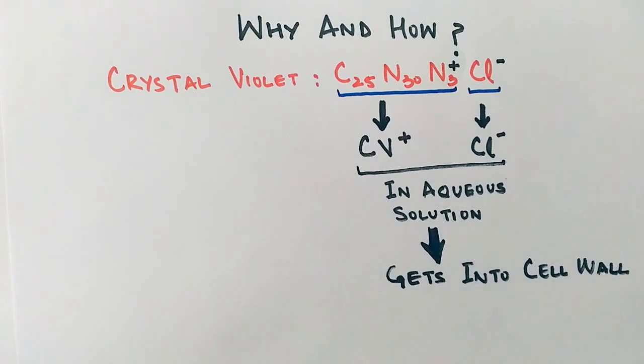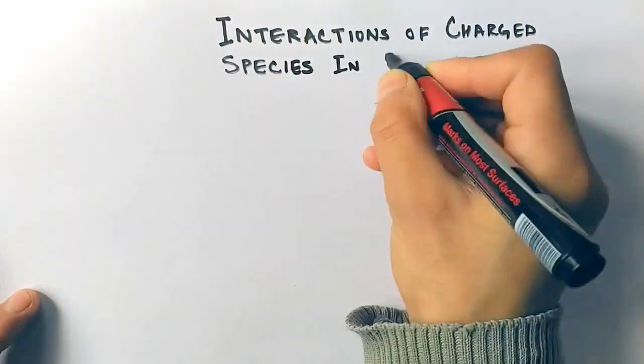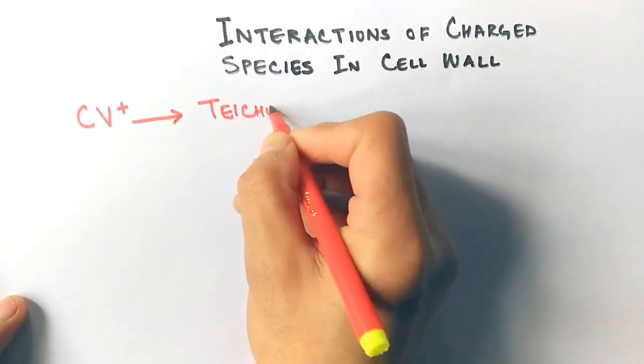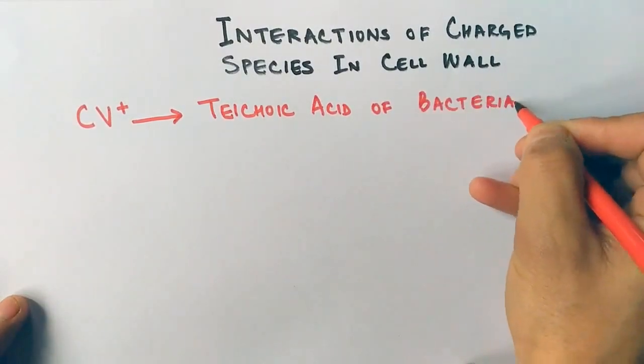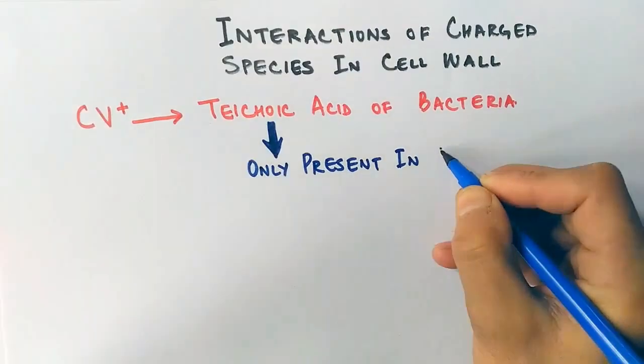After getting into the cell wall, there are different types of interactions of these charged species in the bacterial cell wall. The first interaction is between CV positive and teichoic acid of bacteria, but this teichoic acid is only present in bacteria containing multiple layers of peptidoglycan in the cell wall, whereas in gram negative bacteria it's absent.